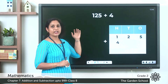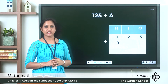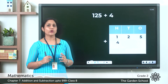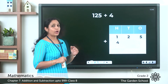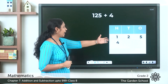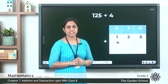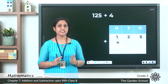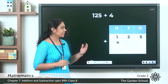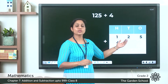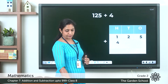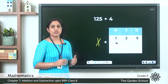The number 125 is a three-digit number, and the next number is 4. What about 4? It is a one-digit number. So how can we write this? We have to add 125 plus 4. If you write 4 here in the hundreds place, it means it is in the wrong position. Four has only ones, so where should we place it — in the hundreds, tens, or ones place?